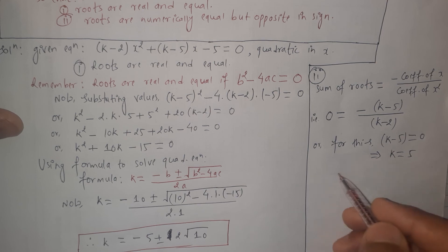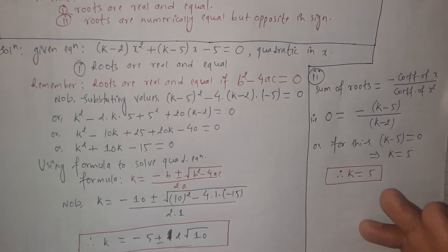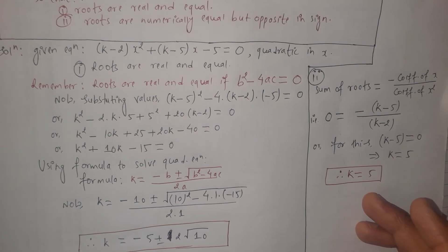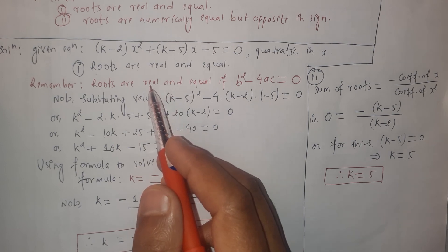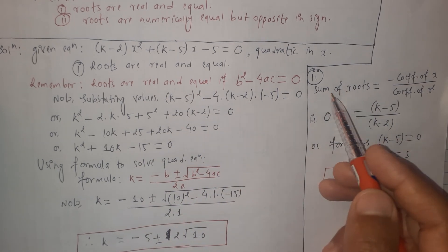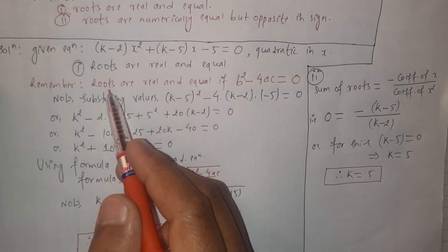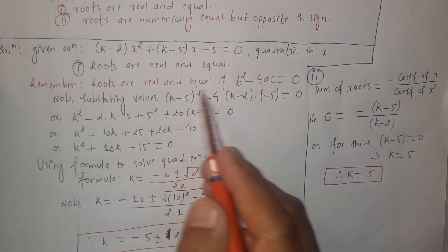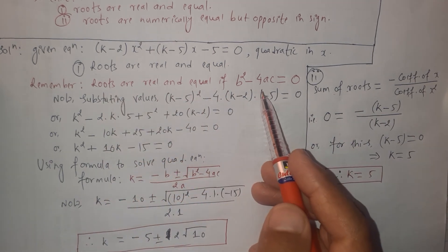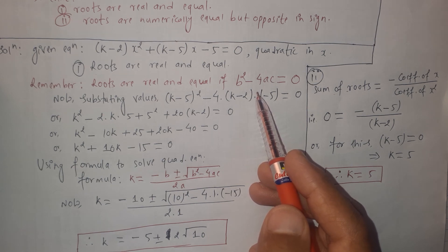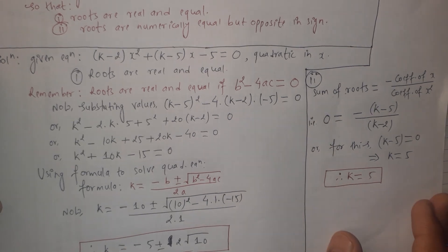This is the final solution for the second case. We solved this problem which was split into two cases. In Case 1, we used the discriminant condition for real and equal roots. In Case 2, we used the concept of the sum of roots. I will share links to both related videos in the description box — one on conditions for real and equal roots, and one on sum of roots. Please watch those videos first. Thank you for watching.